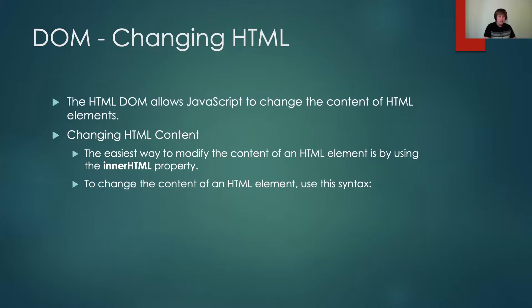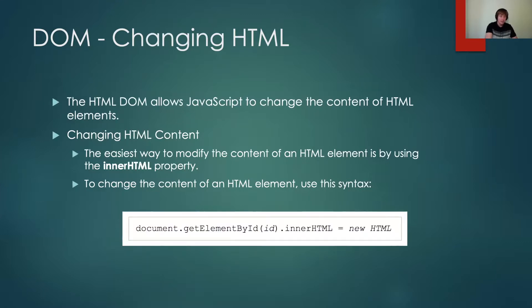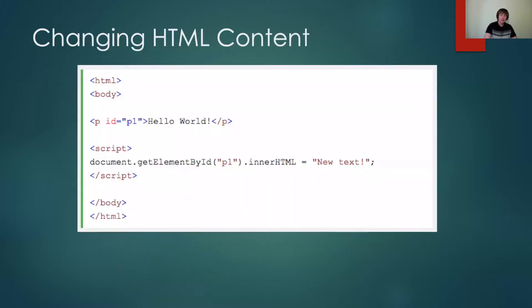Changing HTML content is the easiest way to modify the content of an HTML element, and usually we do that by the innerHTML property. The syntax is: document.getElementById — that's the method — .innerHTML — that's the property — set equal to the new HTML. Here I have the HTML tag. Inside the body, I have a paragraph tag with ID equal to P1 that says Hello World. After the paragraph tag is loaded, a script tag runs. It accesses the DOM, calls getElementById looking for P1, finds it, and changes the innerHTML to equal new text.